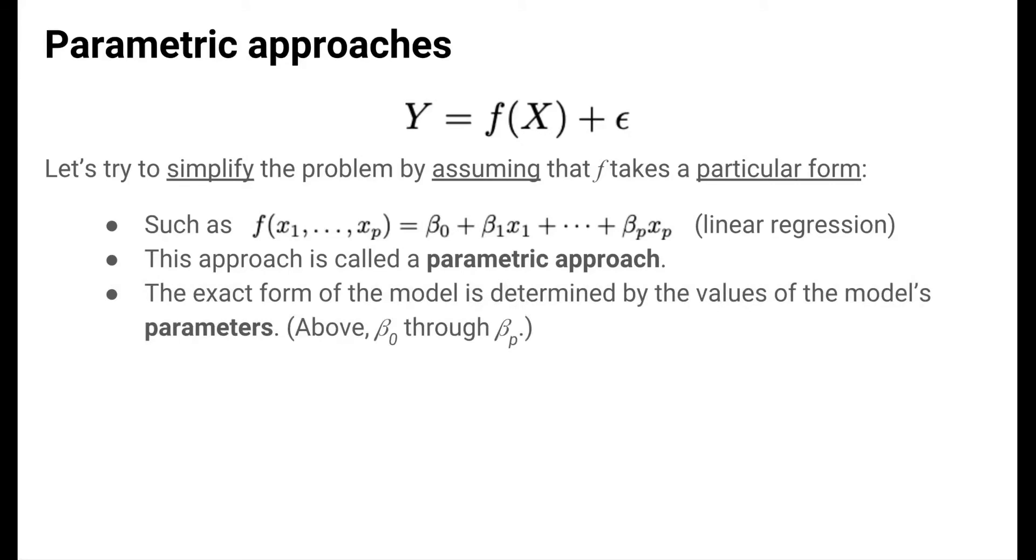The term parametric approach gets its name from the fact that the exact form of a parametric model is determined by the values of the model's parameters. In the linear regression model shown here, the parameters are the beta coefficients.